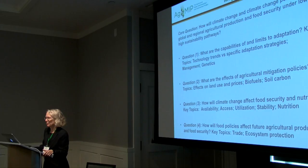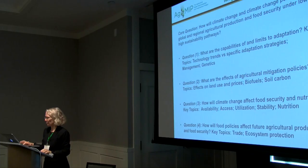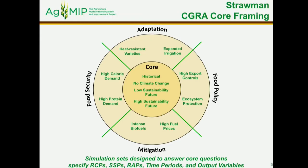Question three tackles how climate change will affect food security and nutrition. The four main topics are the four pillars of food security: availability, access, utilization, and stability. The nutrition question may be too broad — we want to scope what we can actually do. The final question is how food policies will affect future agricultural production and food security, covering the role of agricultural policy, trade, and ecosystem protection.